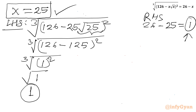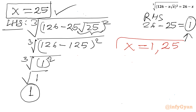So for this radical equation, the real solutions are x = 1 and x = 25. This brings the end of the video friends — do not forget to like, share, and subscribe.